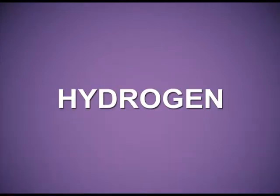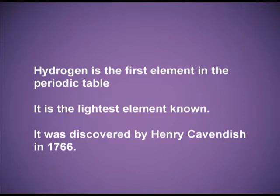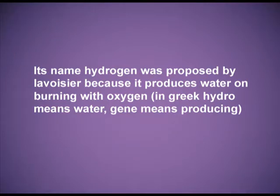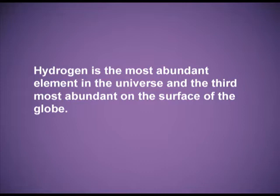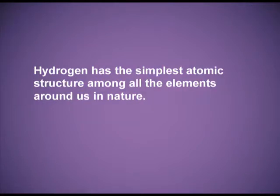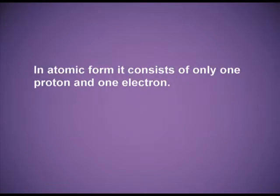Let me give you a quick recapitulation of this topic. Hydrogen is the first element in the periodic table and the lightest element known. It was discovered by Henry Cavendish in 1766, and its name was proposed by Lavoisier because it produces water on burning with oxygen — in Greek, 'hydro' means water and 'gene' means producing. Hydrogen is the most abundant element in the universe and the third most abundant on the surface of the globe. It has the simplest atomic structure, consisting of only one proton and one electron.